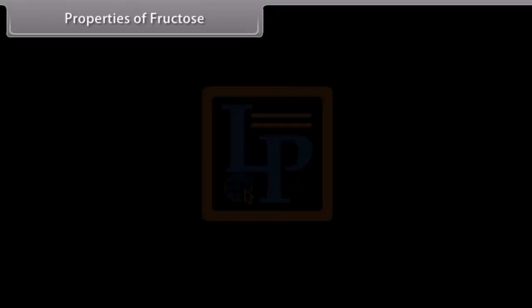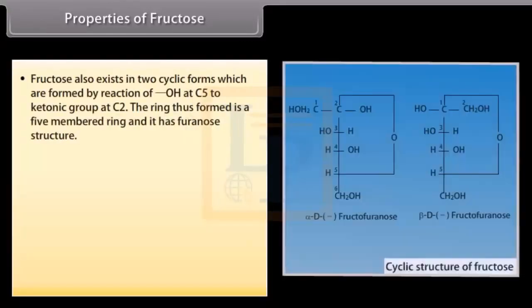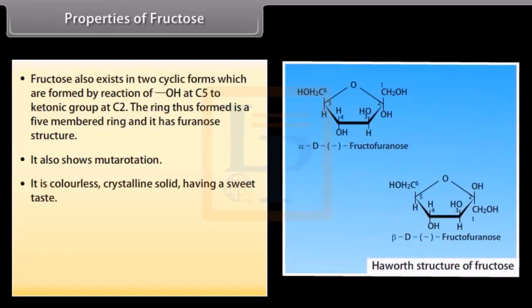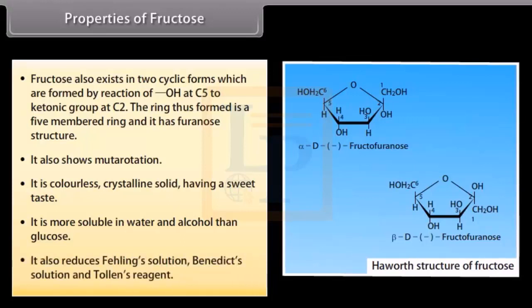The important properties of fructose are as follows. It also exists in two cyclic forms, formed by the reaction of the OH at C5 with the ketonic group at C2. The ring thus formed is a five-membered ring and has a furanose structure. It also shows mutarotation. It is a colorless, crystalline solid with a sweet taste. It is more soluble in water and alcohol than glucose. It also reduces Fehling's solution, Benedict's solution, and Tollens' reagent.